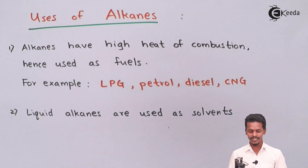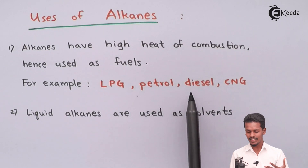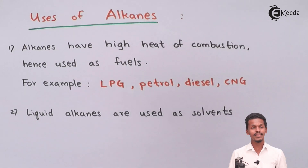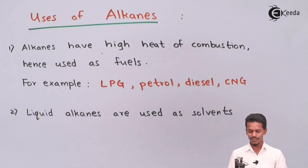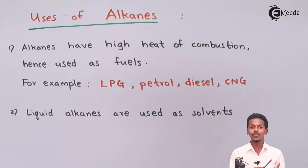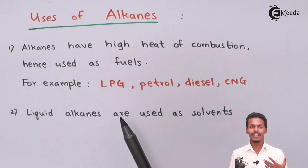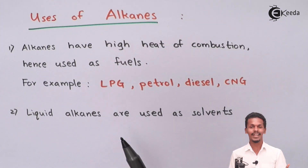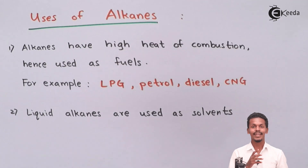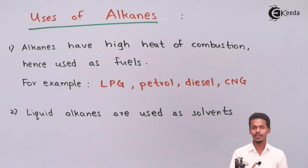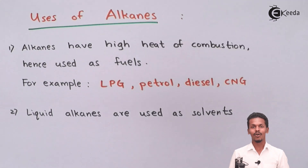Because of this exothermic reaction, LPG, petrol, diesel, and CNG — all of these are alkanes that are used in our domestic life and in our automobiles. When used as a fuel, the heat released from burning is useful for running machines like automobiles, or it is used in cooking food, as in LPG.